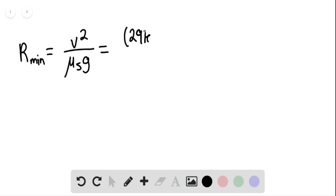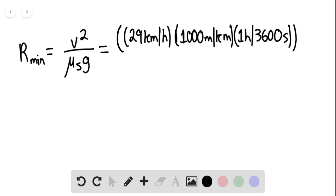This equals 29 kilometers per hour times 1,000 meters per kilometer times 1 hour per 3,600 seconds, and this entire term is squared.